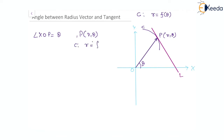We have drawn a tangent PL to the curve at point P. This tangent PL makes an angle ψ (psi) with the positive x-axis. The angle between the radius vector OP and the tangent PL is what we want to find — let us call this angle φ (phi).